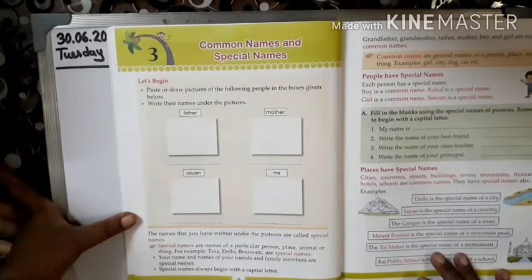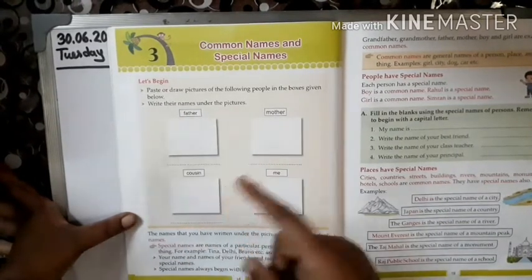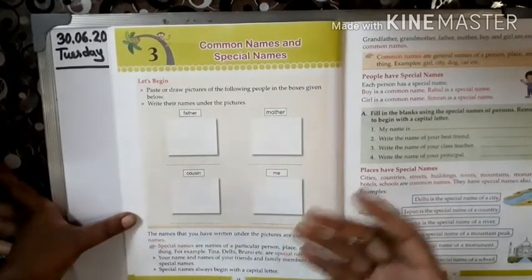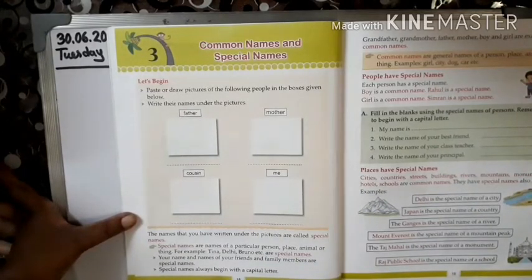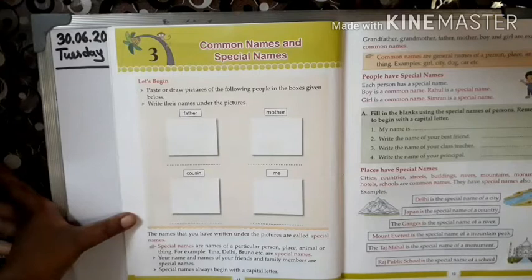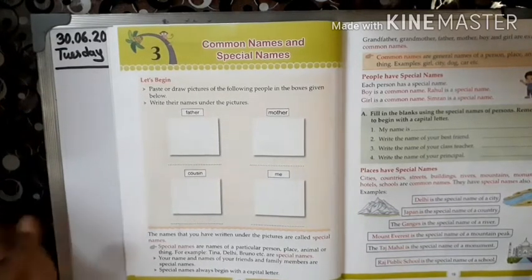Your name, and the names of your friends and family members, are special names. Special names always begin with a capital letter. For example: Tina, Delhi, Japan — J is the starting letter, capital. Special names always begin with a capital letter.